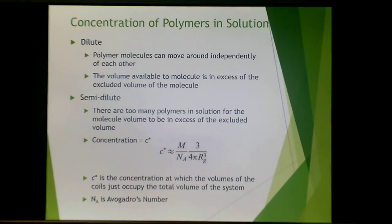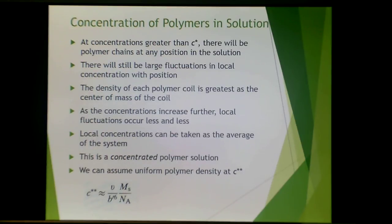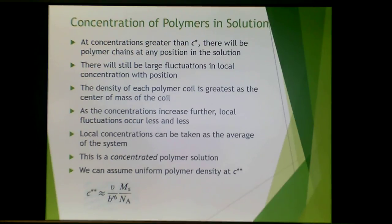Regarding concentration of polymers in solution: in dilute polymer solutions, polymer molecules can move around independently with a lot of volume available in excess of the excluded volume of the molecule. In the semi-dilute regime, there are too many polymers in solution to be in excess of the excluded volume, so chains can see each other. This gives a concentration known as C*, the concentration at which coil volumes just occupy the total volume of the system, where n_A is Avogadro's number. At concentrations greater than C*, there will be polymer chains at any position in solution with large fluctuations in local concentration. The density of each polymer coil is greatest at the center of mass. As concentration increases further, local fluctuations decrease and local concentrations approach the average of the total system — this is a concentrated polymer system — with uniform polymer density at C**.